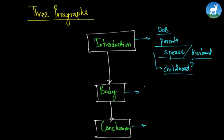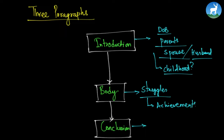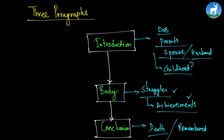In the body paragraph, write about the struggles — all the struggles that the person went through. Write about achievements — what different kinds of things did that person achieve? In the final paragraph, write about death. When did the person die? And write about how he or she is remembered. So we have introduction, body, and finally conclusion.